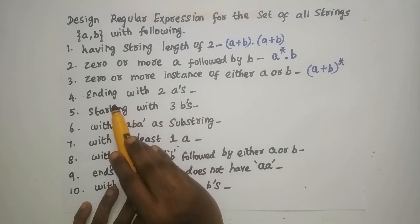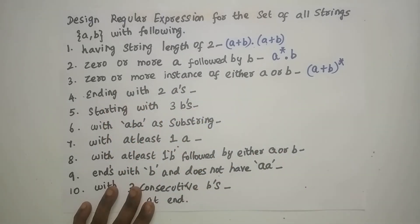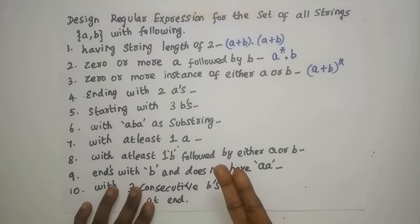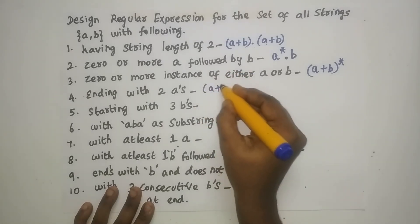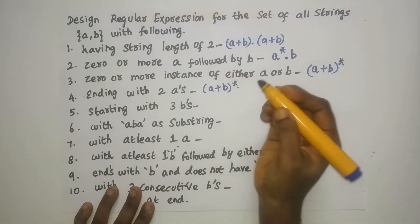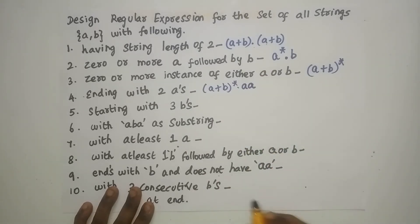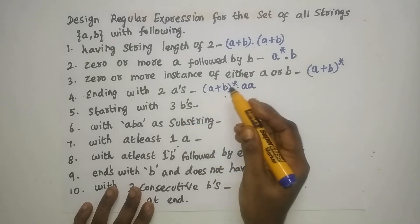Next: design a regular expression for the set of all strings over {A, B} ending with 2 A's. The end of the string must finish with 2 A's, but it can be started with any number of A's or B's. So you can have (A + B)* concatenated with AA — meaning before AA, you can have any number of A's or B's with any number of occurrences.